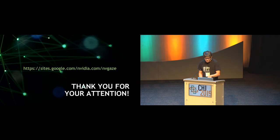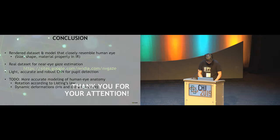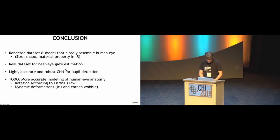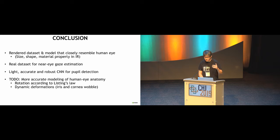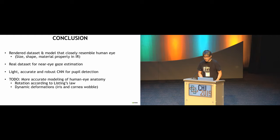In this example, finding pupil center in simple images is very simple, but we have very many challenging cases too. For example, when the eyelid is almost covering the pupil, you have only about one-third of the circle, and we have to find the pupil center there too. Audience: How did the algorithm perform on that kind of challenge?